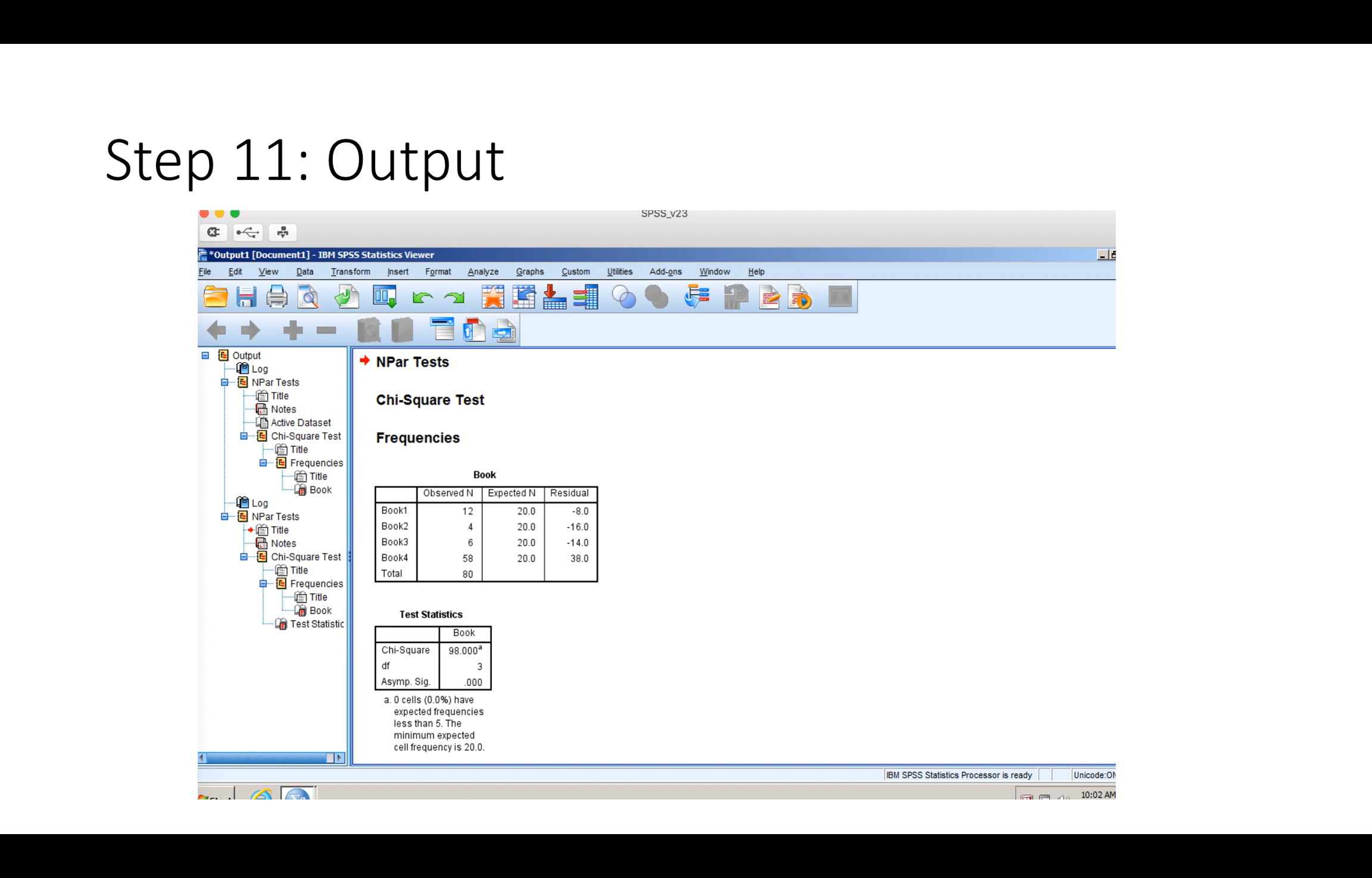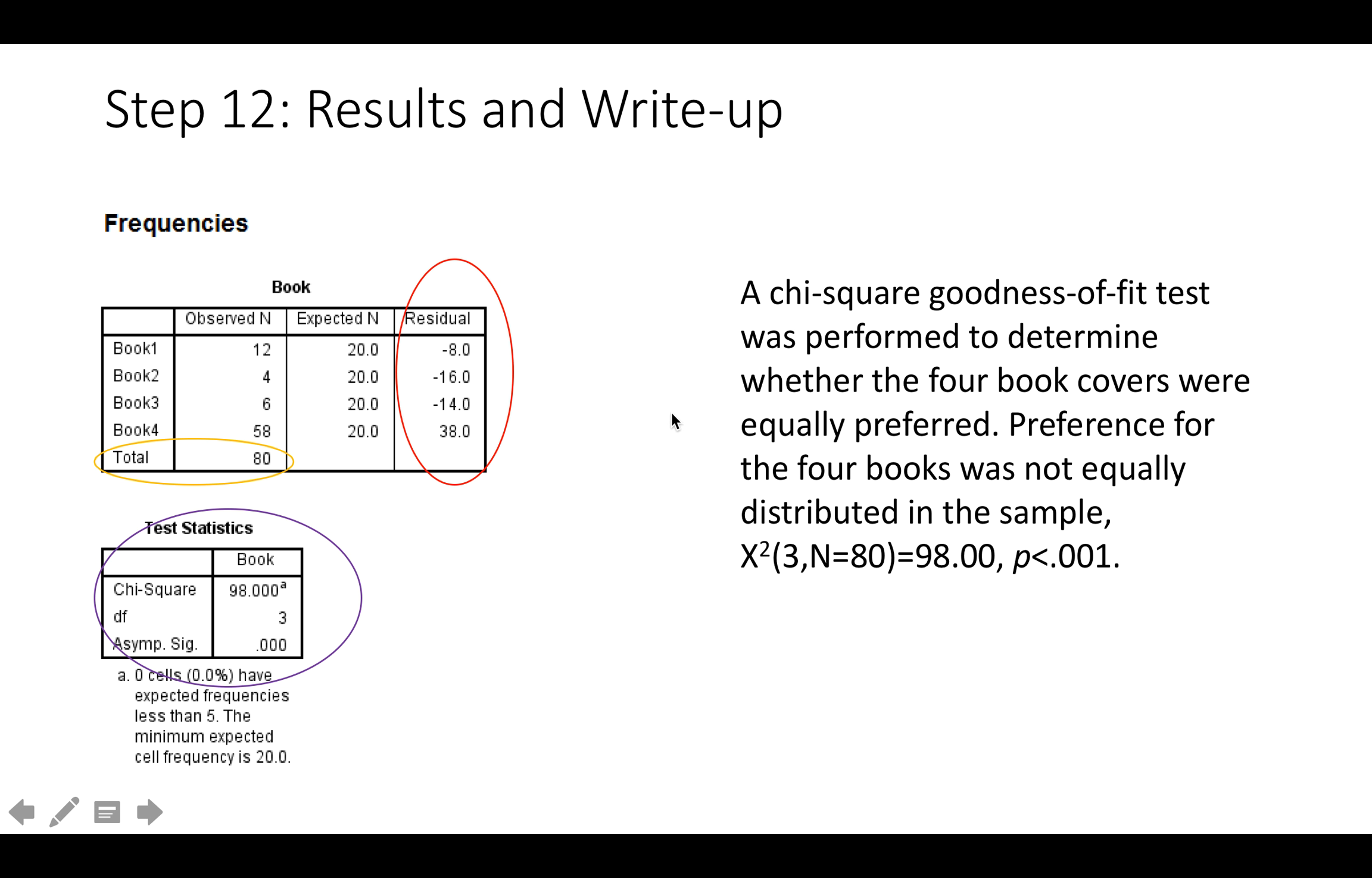And SPSS will spit out an output that looks like this. Now we're going to look at the output more closely. We can look at several things here. First, the residual circled in red is the difference from the observed minus the expected values from the chi-square equation. The n at the bottom is the total number of participants.